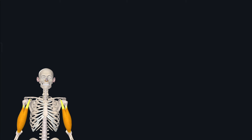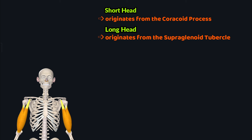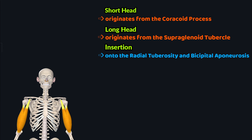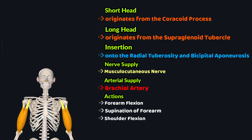To give a quick review: the biceps brachii has two heads of origin — the short head originates from the coracoid process of the scapula, and the long head originates from the supraglenoid tubercle of the scapula. This muscle inserts onto the radial tuberosity and the bicipital aponeurosis. The nerve supply is the musculocutaneous nerve, the arterial supply is the brachial artery, and the actions are flexion of the forearm at the elbow joint, supination of the forearm, and flexion of the shoulder at the glenohumeral joint.